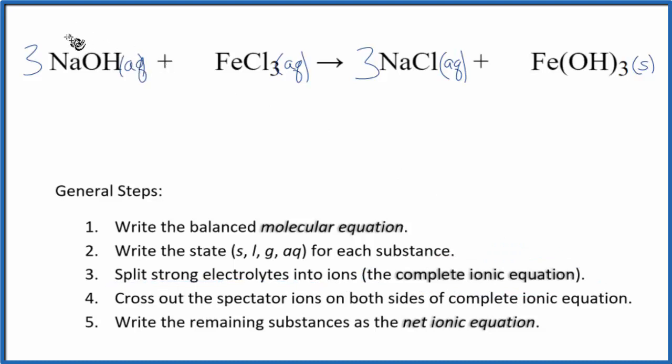Sodium on the periodic table group 1 has a 1 plus hydroxide, always has that negative charge. 3 sodium ions, and I won't write the states right now. Let's do that at the end.